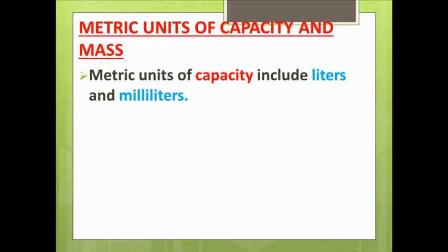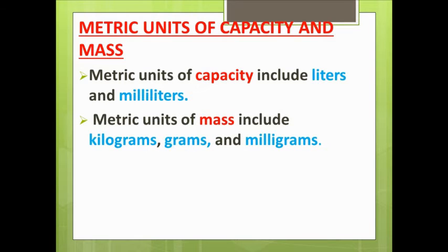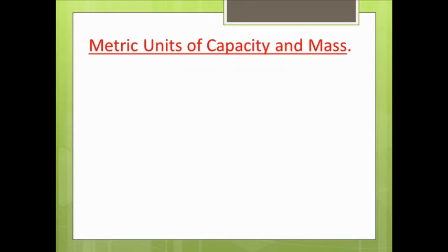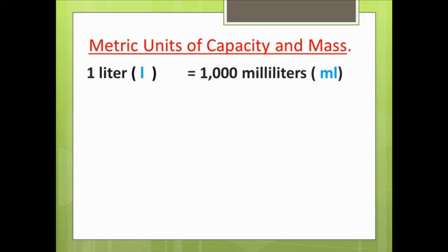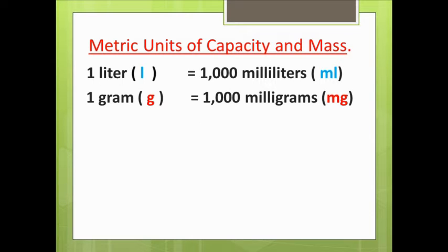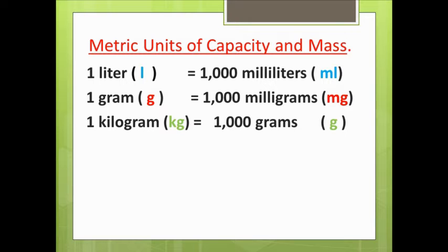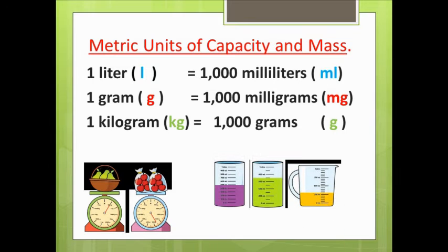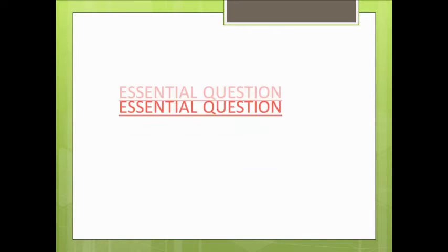Metric units of capacity include liters and milliliters. We usually use liters and milliliters when dealing with liquids. Metric units of mass include kilograms, grams, and milligrams. The key conversions are: one liter equals one thousand milliliters; one gram equals one thousand milligrams; one kilogram equals one thousand grams.